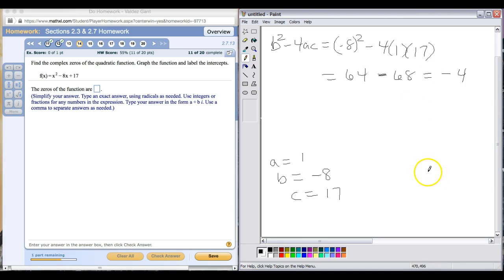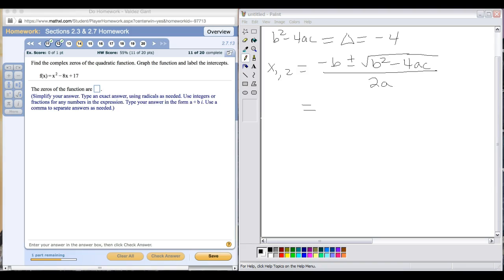We want to keep that in mind. Our discriminant here is negative 4, shown by the delta sign. I'll go ahead and clear out everything else so that we can have room to solve this problem now.